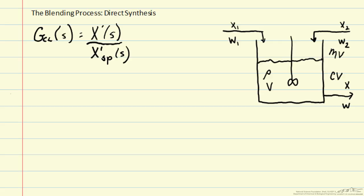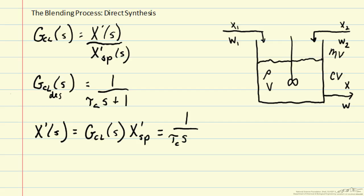So instead, what we will do is we will specify the desired value for a closed-loop as, instead of 1, it will be 1 over tau c s plus 1. If this is our closed-loop behavior, we can calculate how x prime will change when we make a change to the set point. So we will have 1 over tau c s plus 1, and then we can multiply that by our set point change.